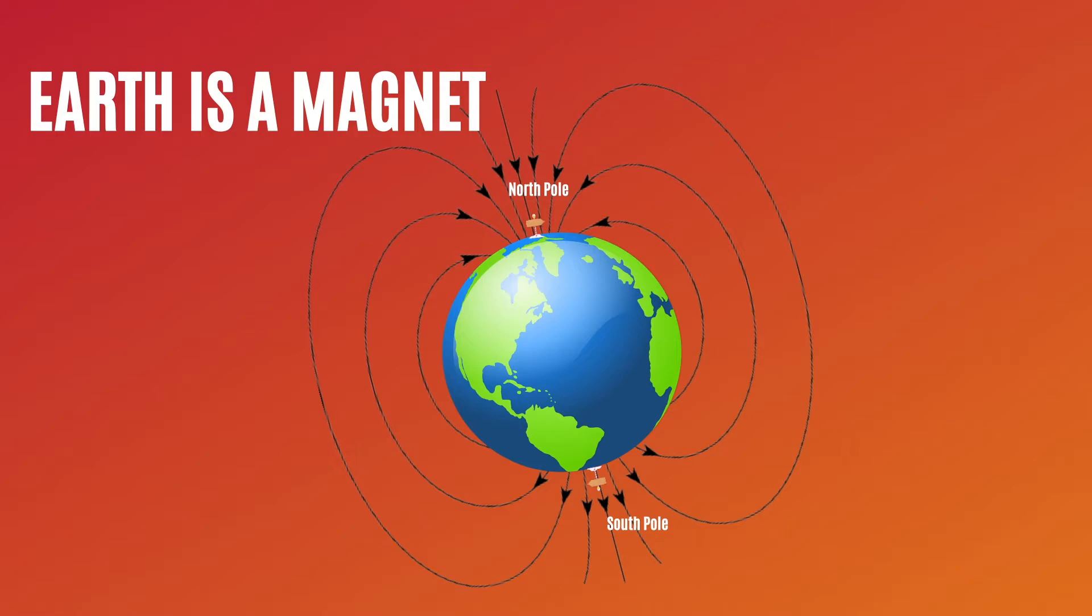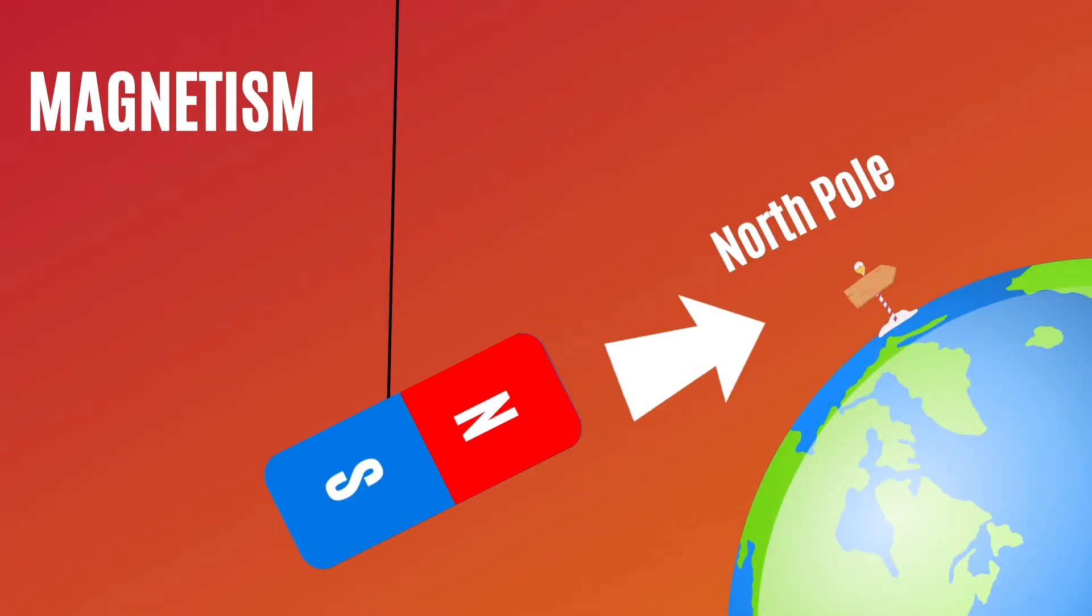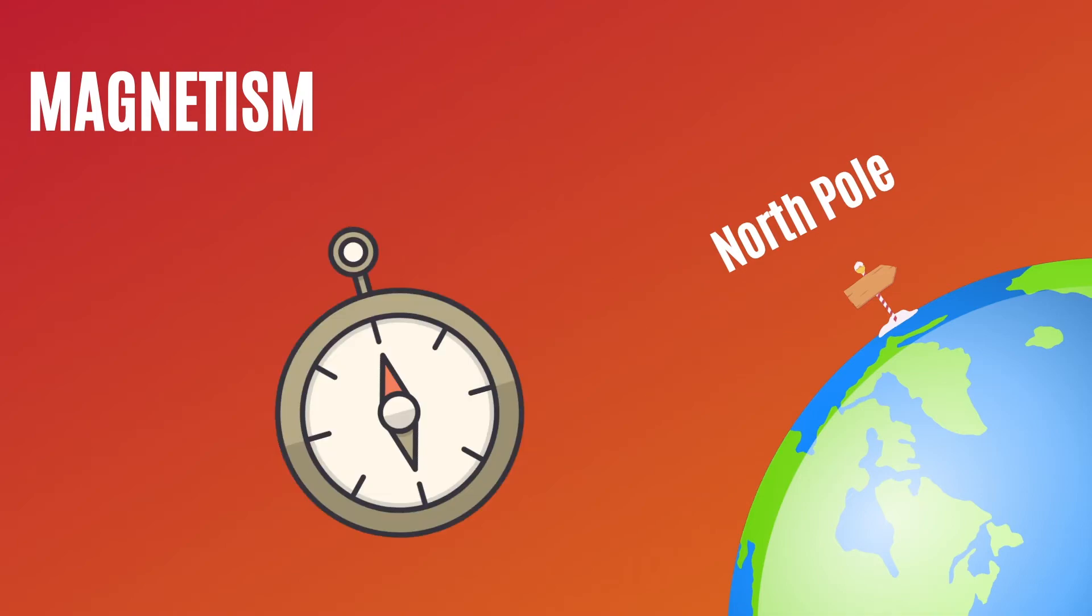We named magnets North and South Pole because when you hang a magnet on a piece of string, the north side points towards the North Pole. The northern part of the magnet is attracted to the southern part of Earth's magnetism. This is the principle to which basic compasses use.